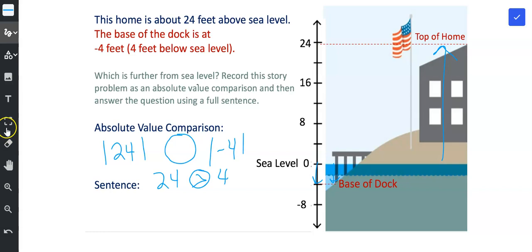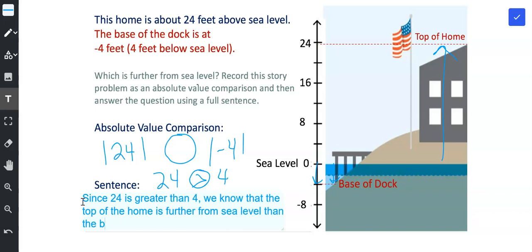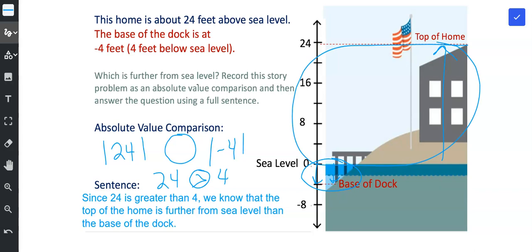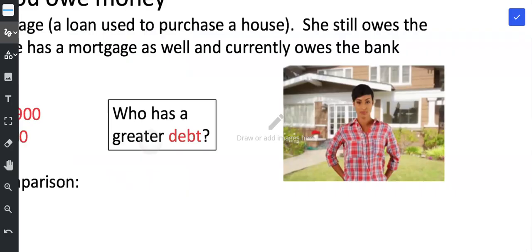And now I'm ready to type my sentence. So I'm going to say that since 24 is greater than 4, we know that the top of the home is further from sea level than the base of the dock. And I hope that you can see that in the picture too, that the base of the dock is pretty close to sea level, so it's not that far away. But the top of the home is pretty far from sea level.